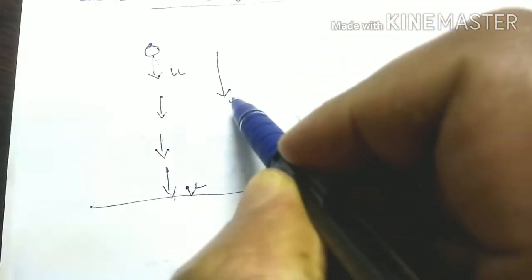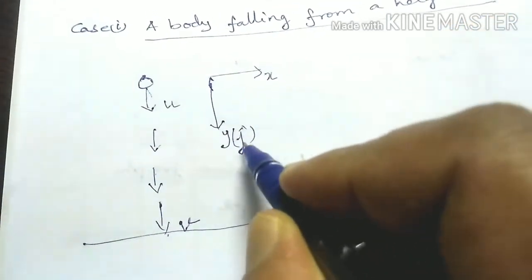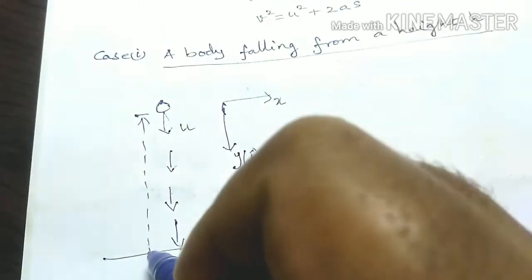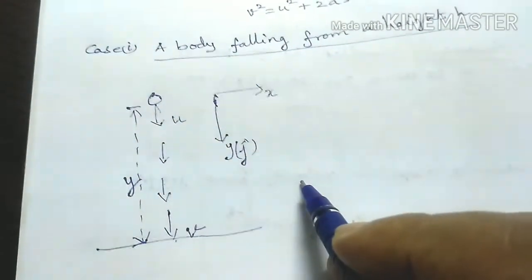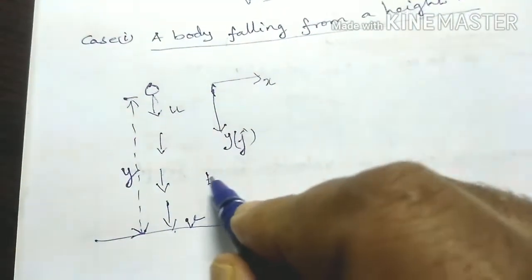The positive y-axis is in the downward direction. During this displacement, the object covers a distance along the y-axis level. For this travel, it takes a time t to cover the distance.